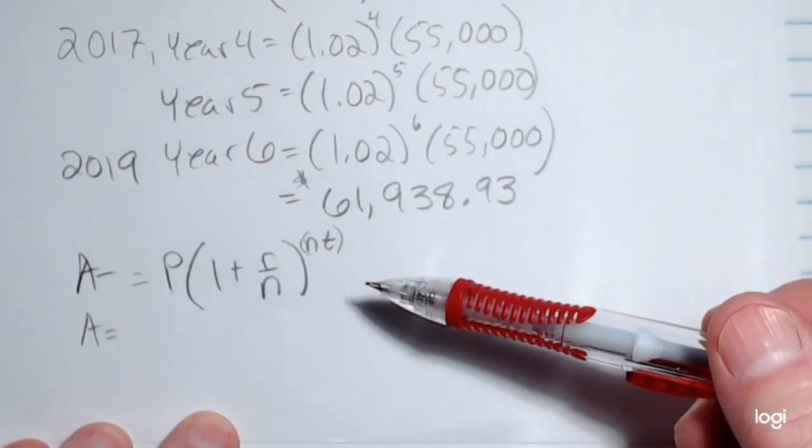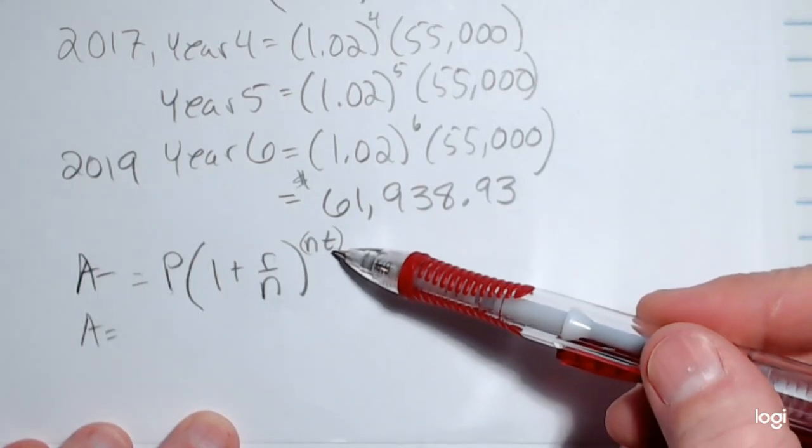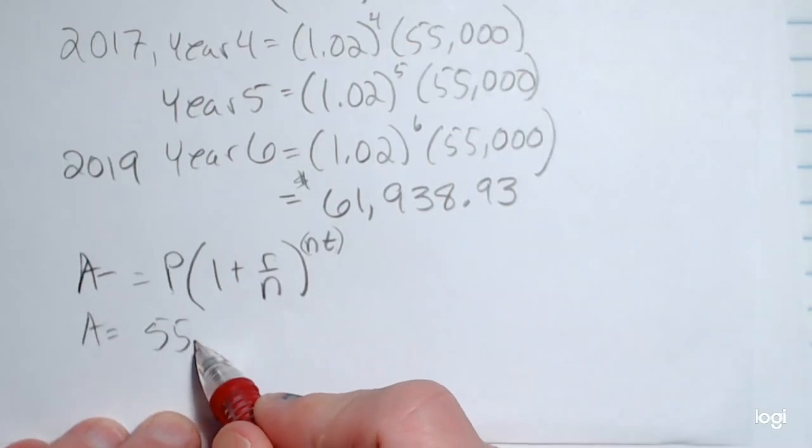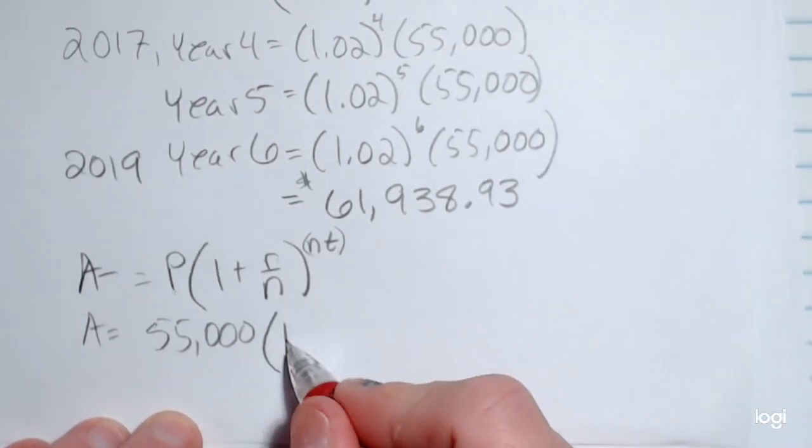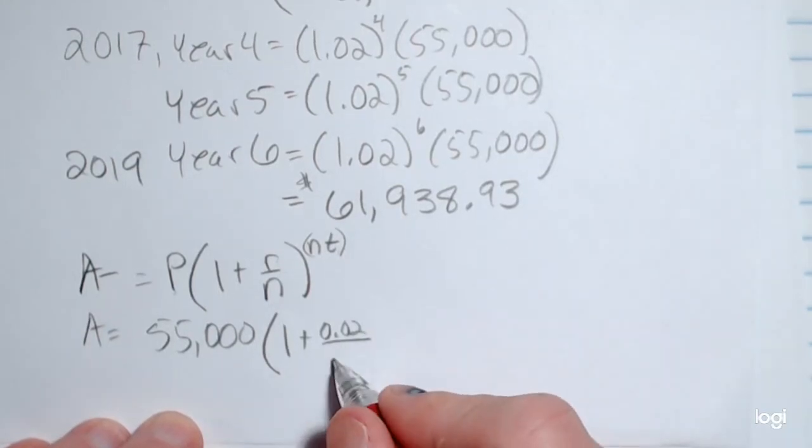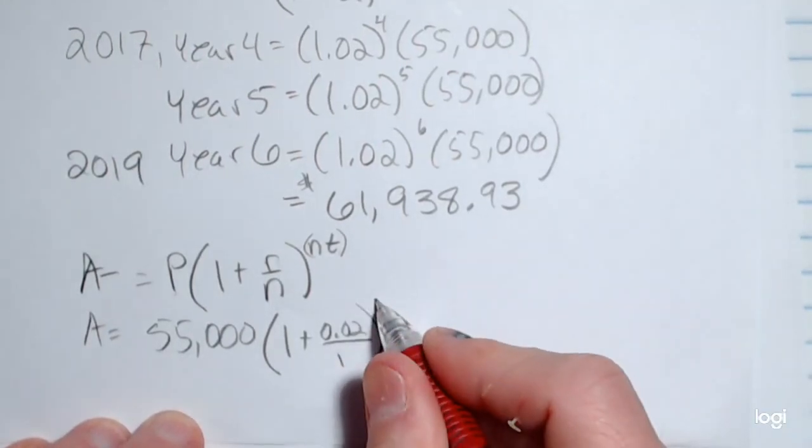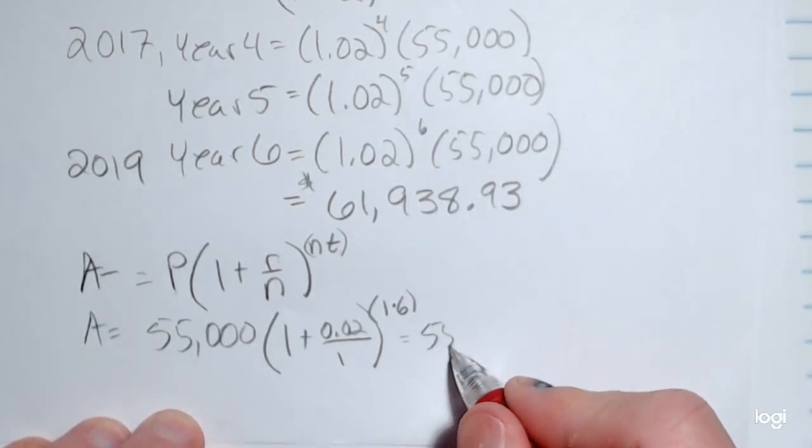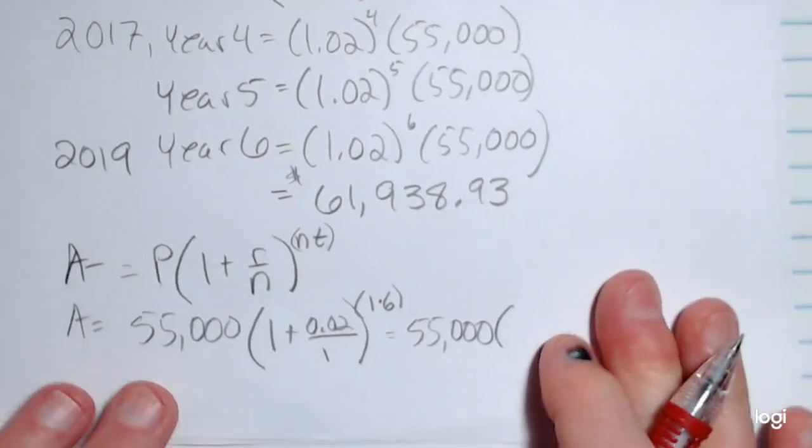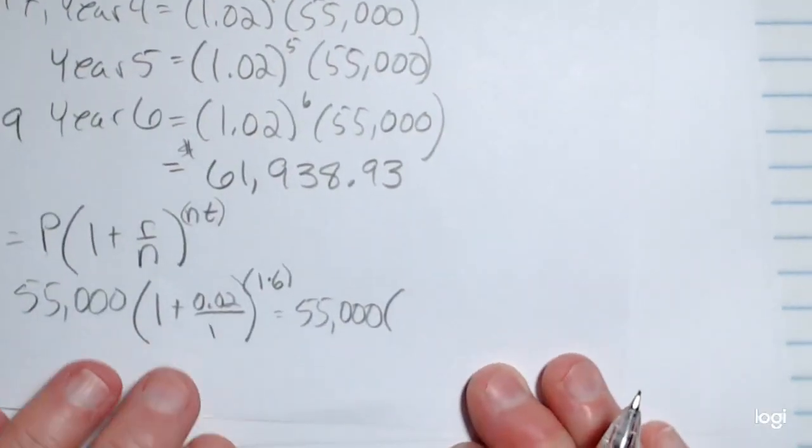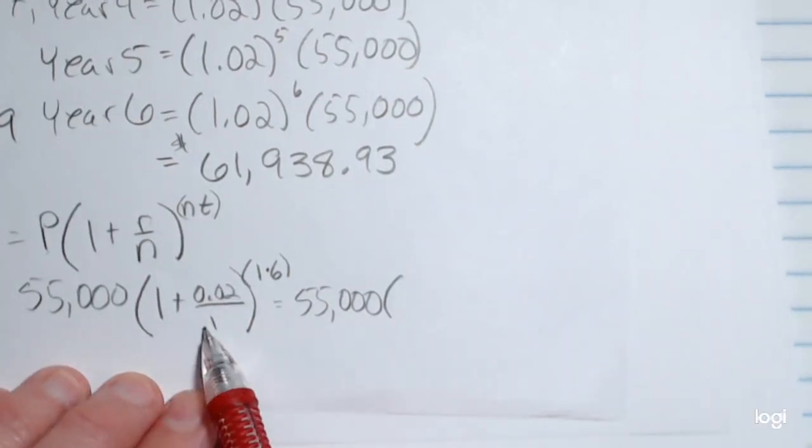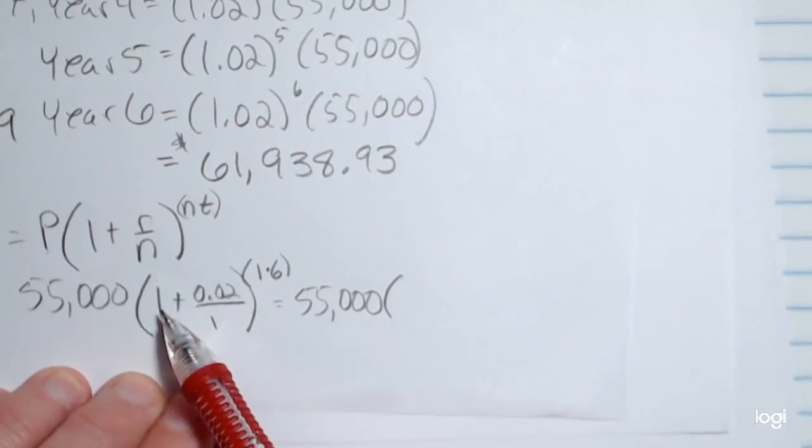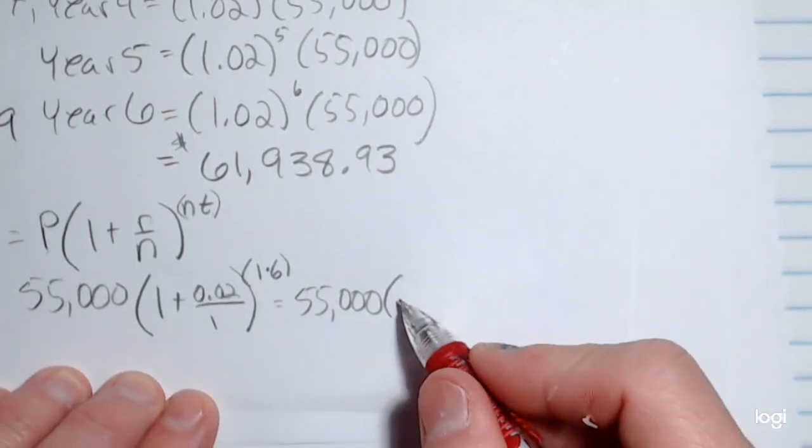So plugging in, I get $55,000 times 1 plus 0.02 over 1 raised to the 1 times 6 power. Now we can clean this up a little bit. It's $55,000 times—now this is just 0.02. 0.02 over 1 is just 0.02, and 1 plus 0.02 is 1.02, raised to the sixth power.